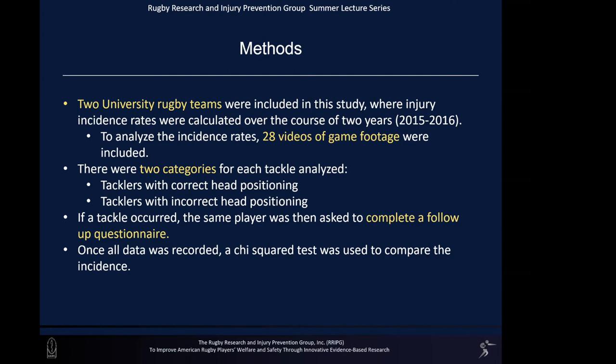In this study, researchers used two university rugby teams and calculated injury incidence rates over two years — 2015 and 2016 — by analyzing 28 videos of game footage. Every time a tackle occurred, the player was placed into either a 'correct head positioning' or 'incorrect head positioning' category. If placed in the incorrect category, the player completed a follow-up questionnaire asking about their rugby experience, the rules and safety measures they were taught, their position, and whether the incorrect head positioning was intentional, habitual, or unintentional.